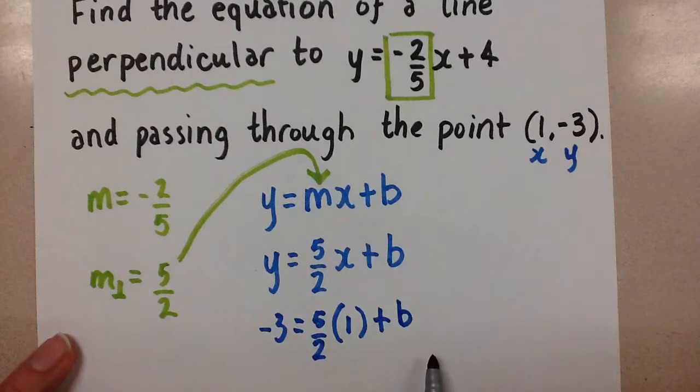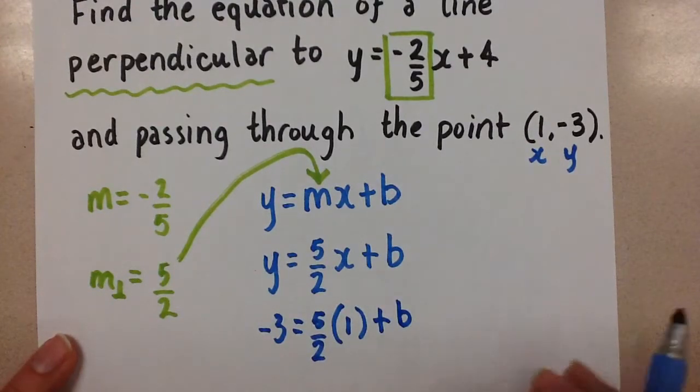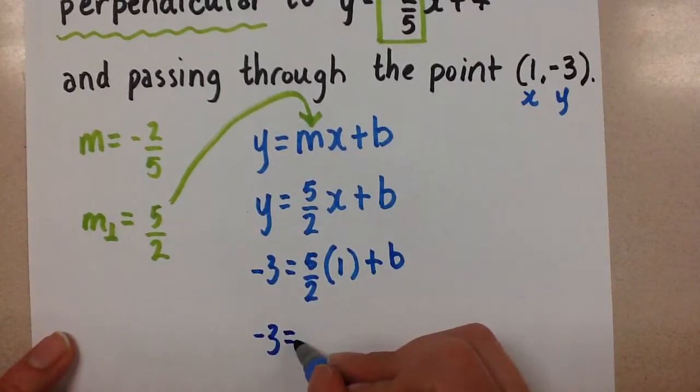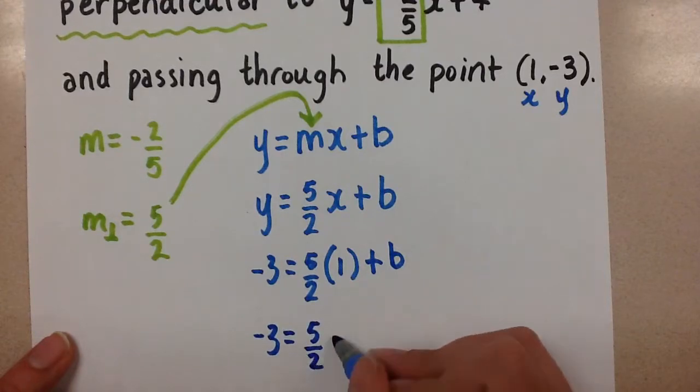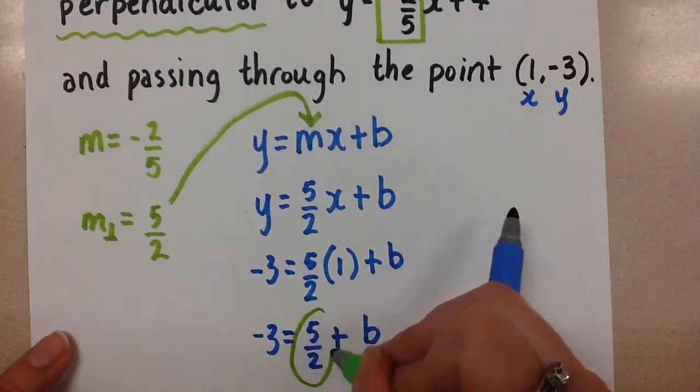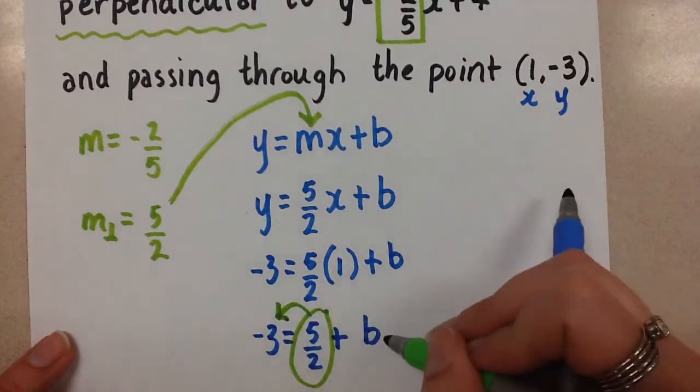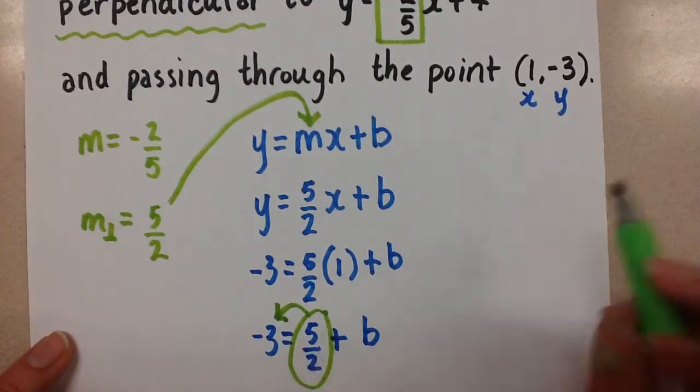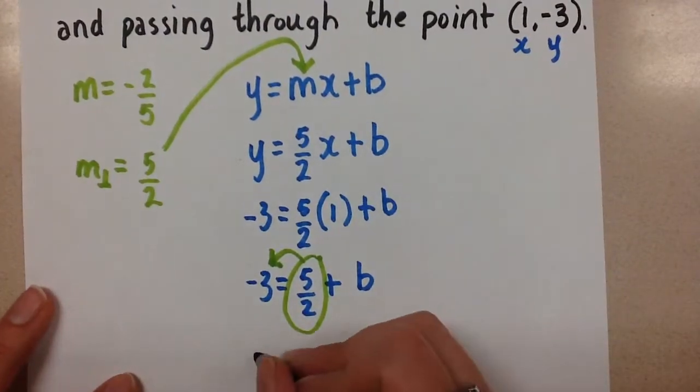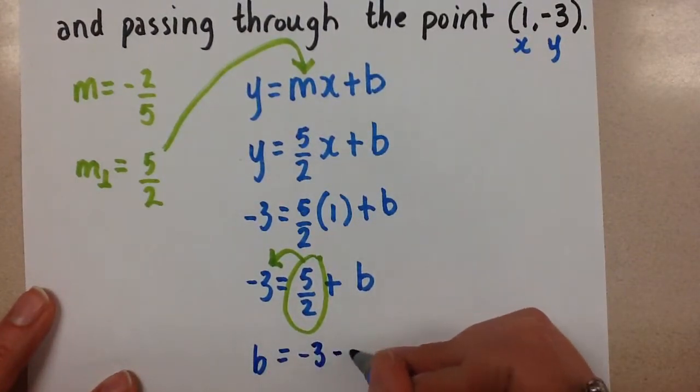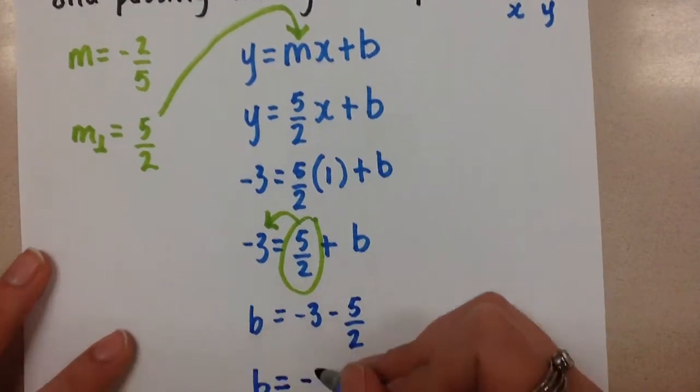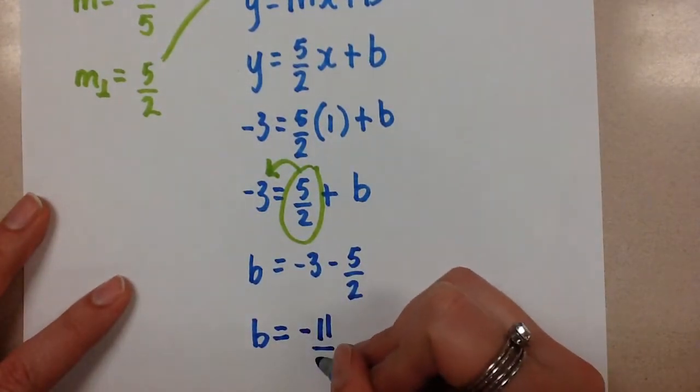Now this is a simple equation with one unknown. We can solve for that b value. So let's do that. We're going to multiply this together first. Negative 3 equals 5 over 2 plus b. And now I want to take this 5 over 2 and get it to the other side so that the b will be by itself. Here it's positive, so we'll subtract it on the other side. So b is going to be equal to negative 3 minus 5 over 2. That gives us a b value of negative 11 over 2.